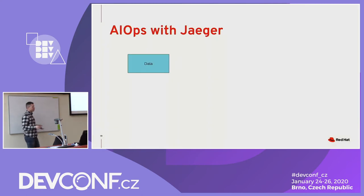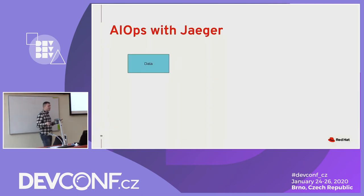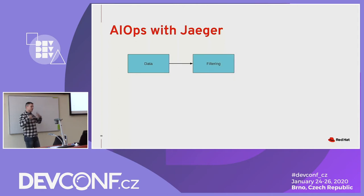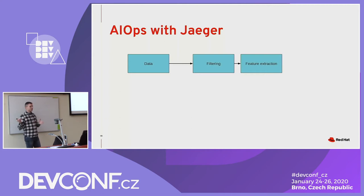So, how do we approach this in Jaeger? At the beginning we have to query the data — we have a lot of data and need access to it. Then we apply some filtering, and after the filtering we run the model or just extract the features we're interested in. The result is data again — we have to store it somewhere.